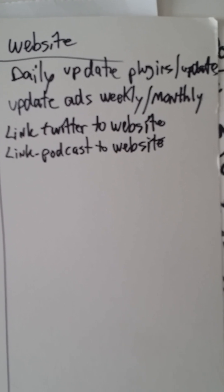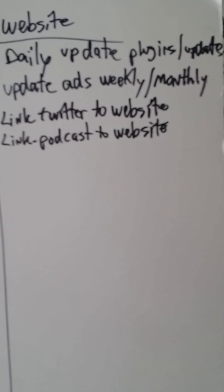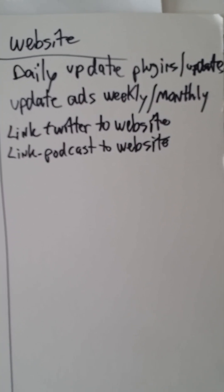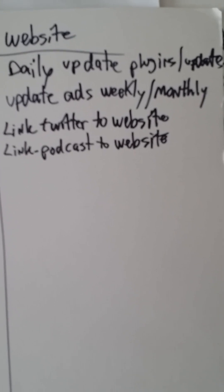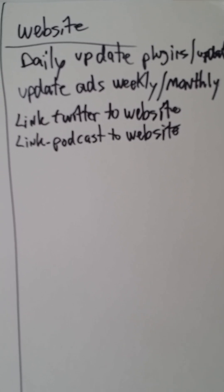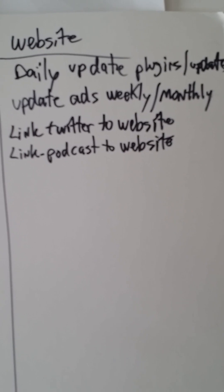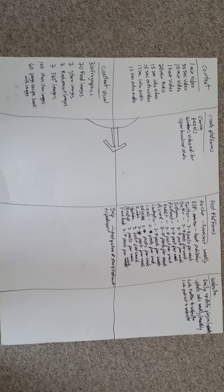If you want to manage your own website, you need to do daily updates — that means updating plugins and the site itself. If you have ads on your restaurant or business website, you can update with weekly or monthly ads. You also want to link your website to Twitter and link your podcast to Twitter.